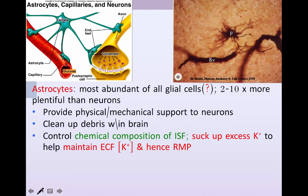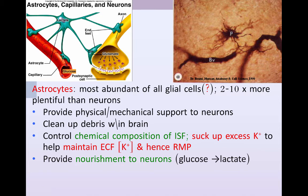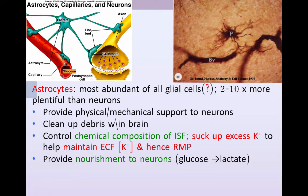Potassium is found primarily inside the cell, but when action potentials occur, potassium has to leave the cell, so these astrocytes play an important role in that respect. Astrocytes also help to provide nourishment to neurons — they take up glucose from the capillaries running through the brain, break it down via fast glycolysis to lactate, and shuttle it over to the neurons, which then break it down to CO2 and water to generate ATP.